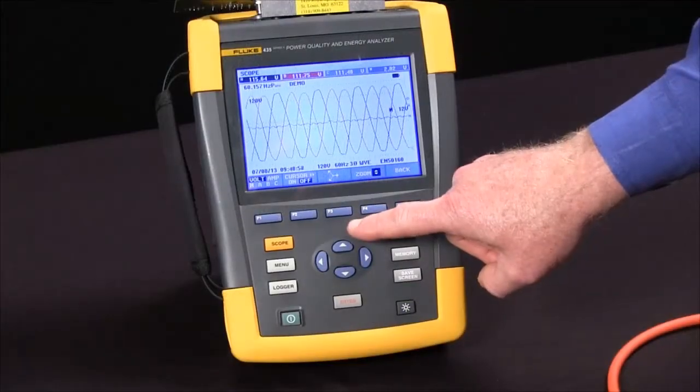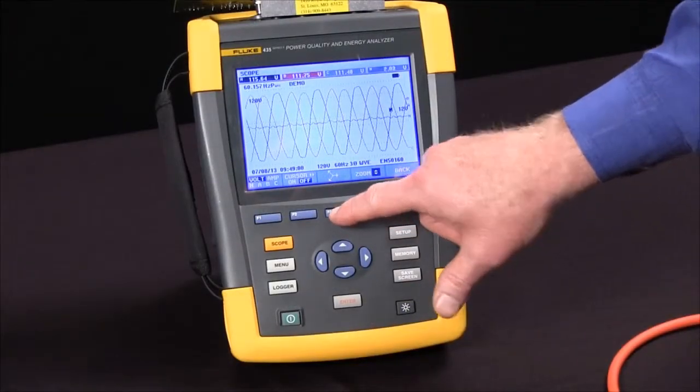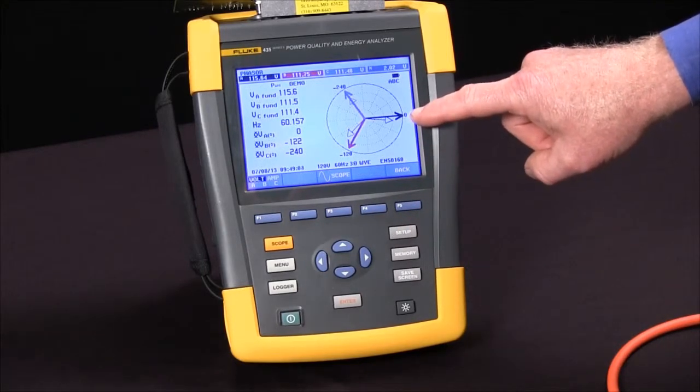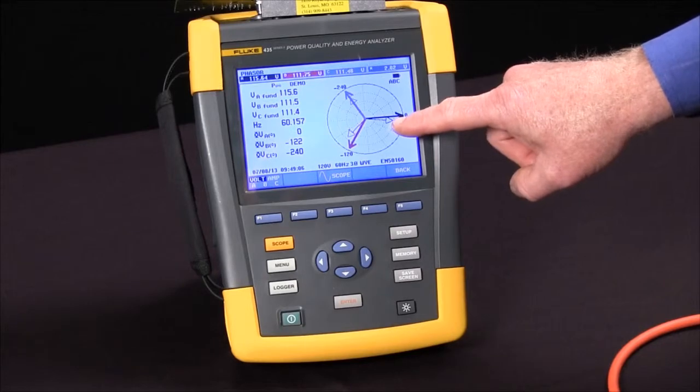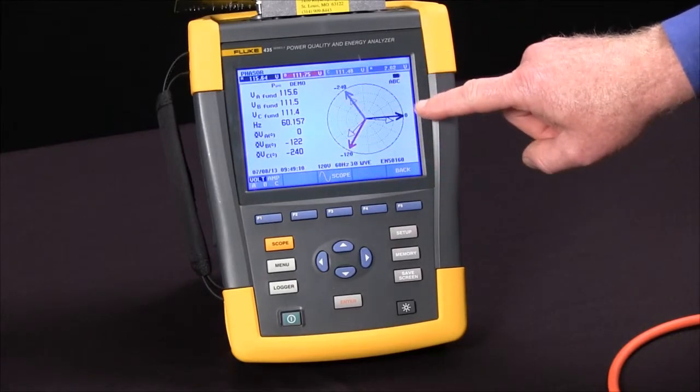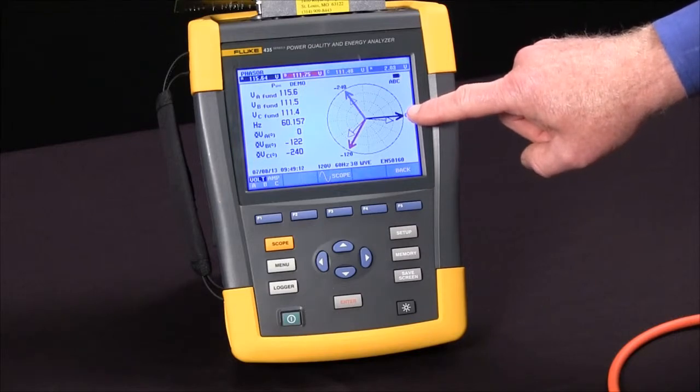If we use the F3 key to pick up a phaser view, we'll see some bold vectors for our voltage and some lighter vectors for our current. If things are properly connected, we should see those vectors being close to in phase with each other.